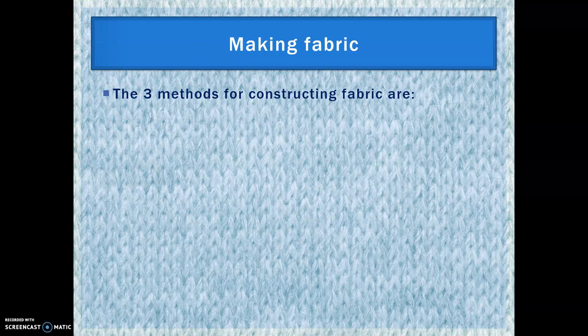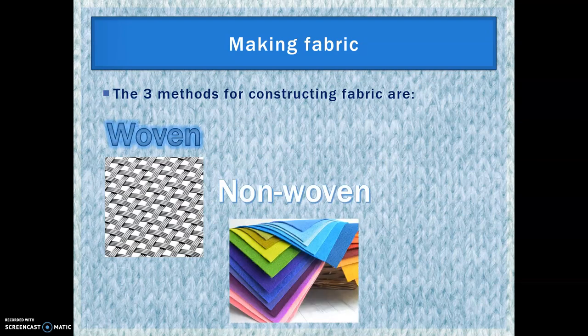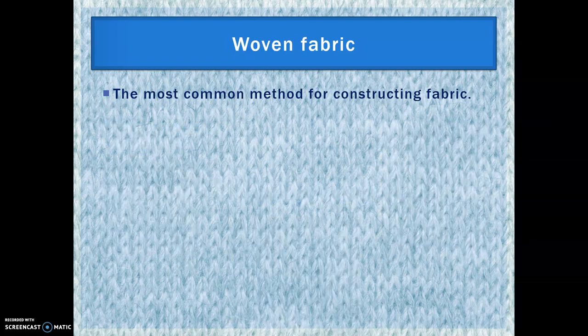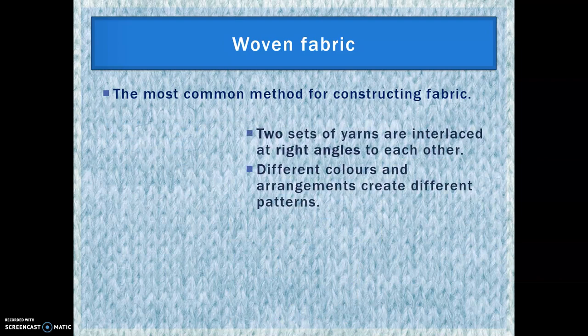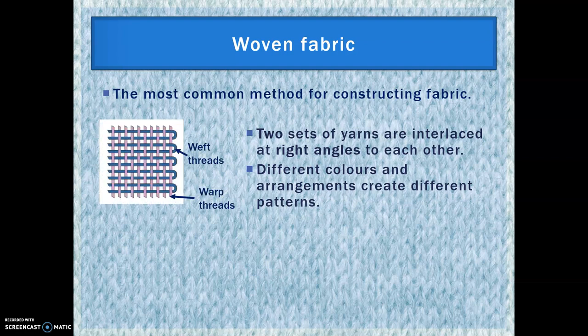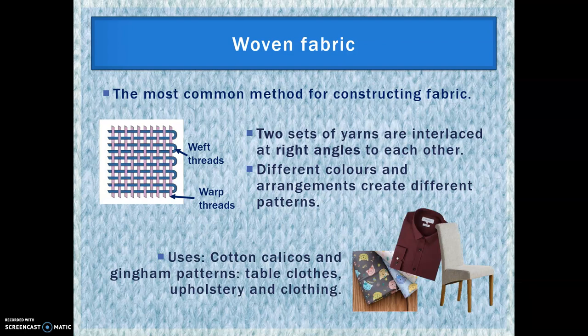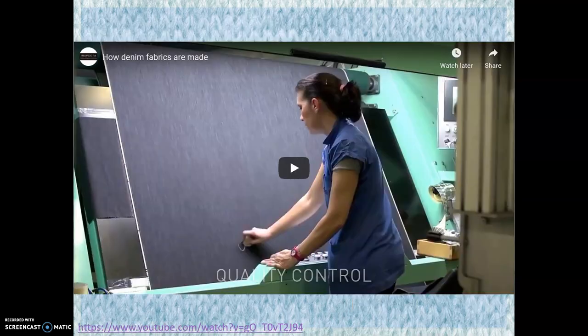There are three main methods for constructing fabric: woven, non-woven and knitted. The most common is woven fabric, where two sets of yarns are interlaced at right angles — you have the weft threads and the warp threads. A way to remember it: weft goes left to right; warp goes up and down. Combining different colours and arrangements creates different patterns within the weave. It's used for tablecloths, upholstery, clothing and bedding. There's also a brilliant video on how denim is made from fibre to garment — pause and go watch that one.